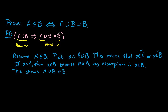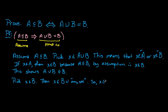Now we need to show subset containment the other way. Let's pick X an element of B; we want to show that X lives in A union B. If X is in B, then X is an element of B union any other set, so certainly X is an element of A union B. This shows that B is a subset of A union B.